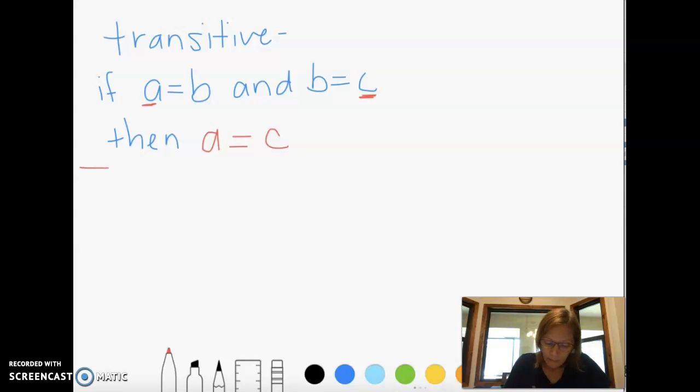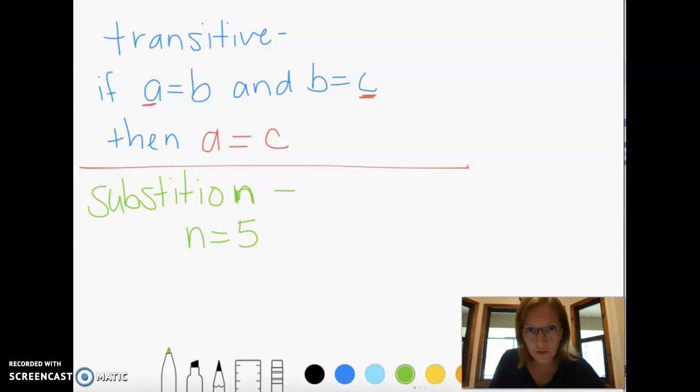And then the last property is called the substitution. And that substitution is just what it sounds like. It's when you stick something in as a substitute for something else. So usually we're substituting numbers for letters in math. For example, if they tell you that n equals 5. I just realized my notes are wrong. That's why I paused for a second. Sorry. Teachers make mistakes too. So if they say n equals 5 and then they give me this equation, 3 times n.